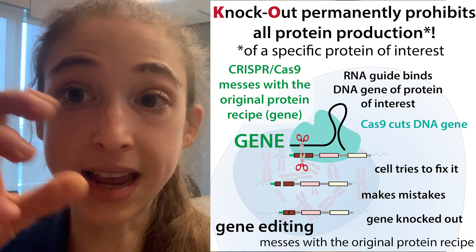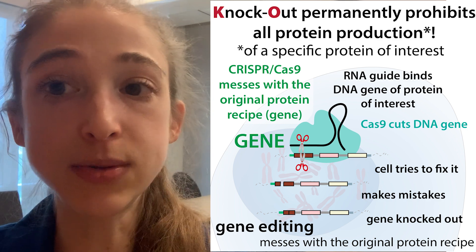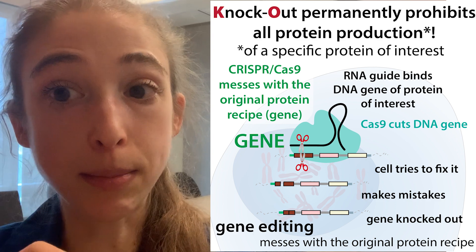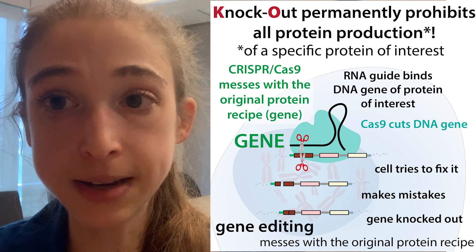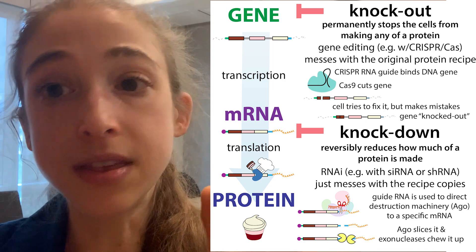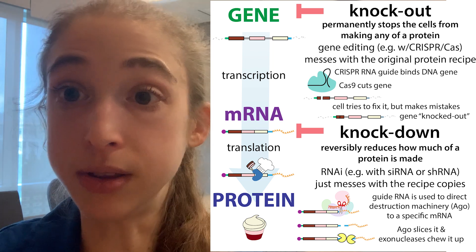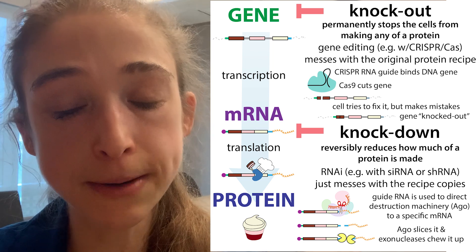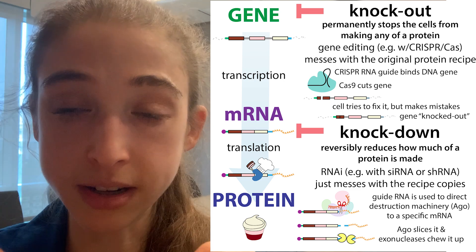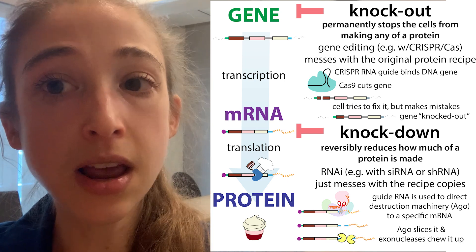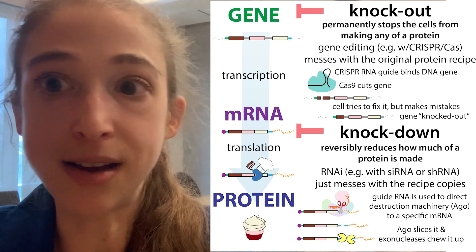In the CRISPR system, the Cas protein — the one that has the scissors — goes and cuts the DNA, not the messenger RNA, so it permanently knocks things out. You target it by putting in a guide RNA, which tells the Cas protein where to go and cut. In the case of RNA interference, the siRNA or shRNA that gets processed into mature guides tells Argonaute where to go and shut down the transcript. In both cases, we have RNA guides that direct the machinery to various targets. If we can make a library of those guides, we can test a wide variety of targets and see which have what effect.